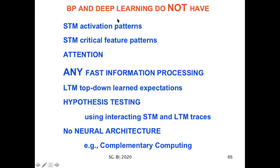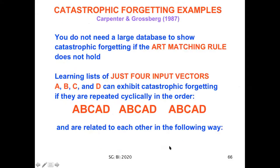In summary, backpropagation and deep learning do not have short-term memory activation patterns, short-term memory critical feature patterns, any form of attention or any fast information processing. They don't have long-term memory top-down learned expectations. They don't have hypothesis testing using interacting short-term memory long-term memory traces. In fact, there's no neural architecture as we find by contrast in complementary computing.